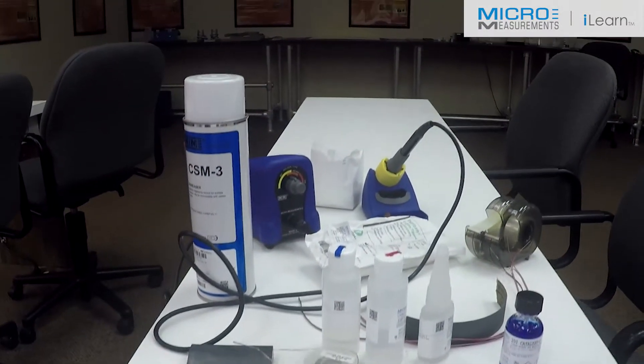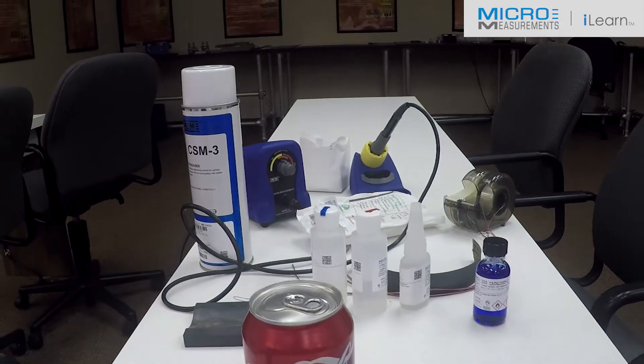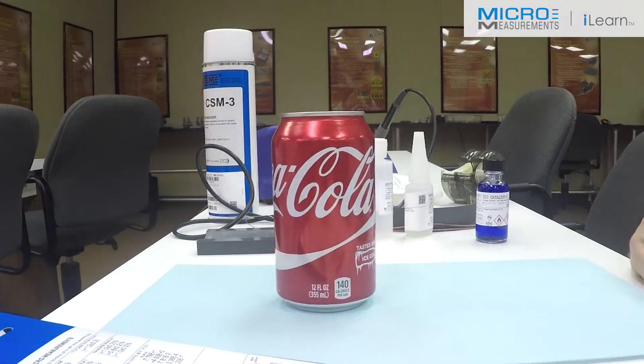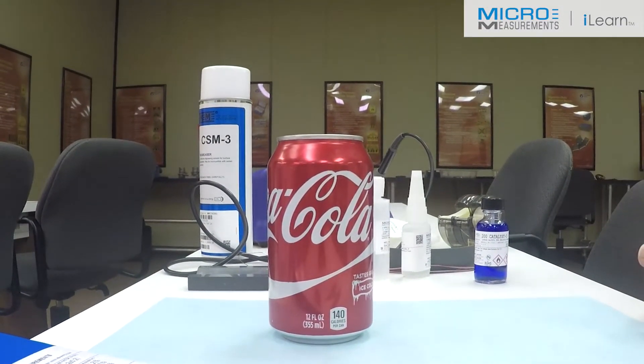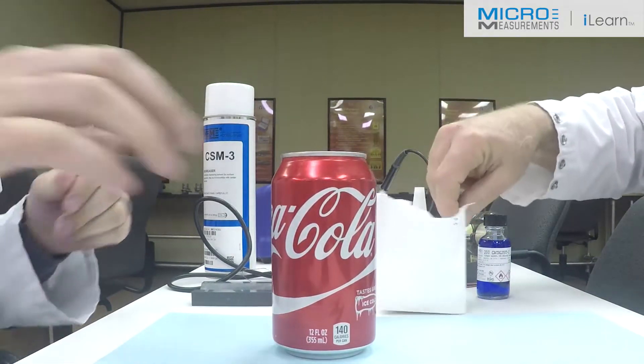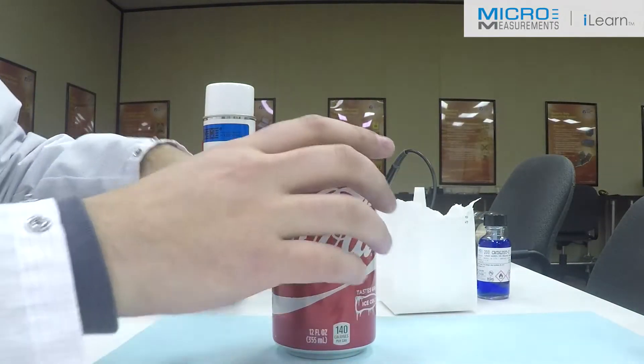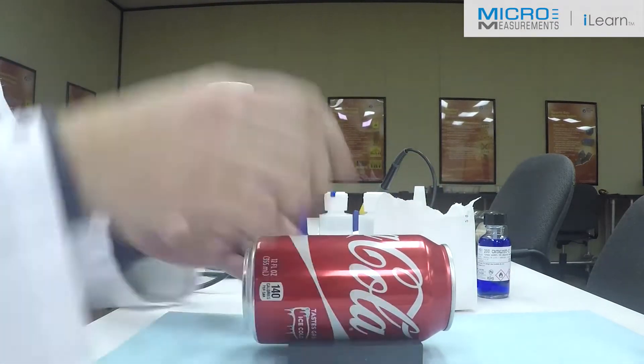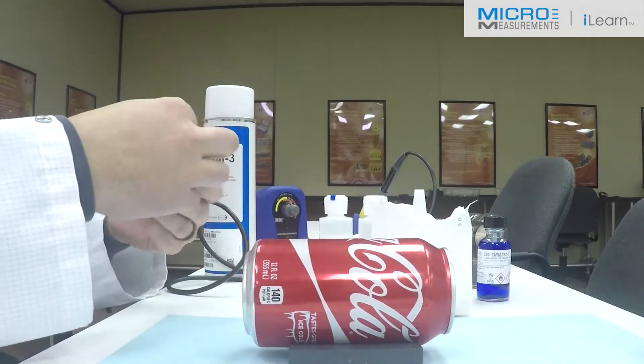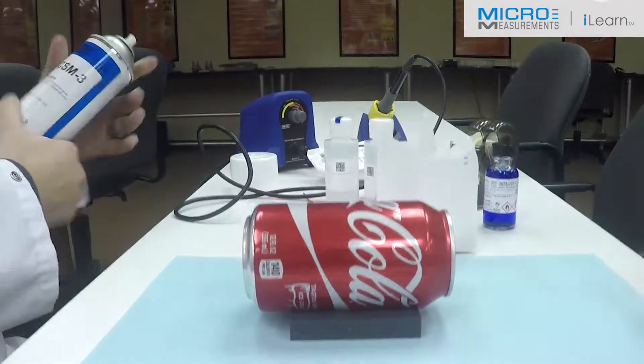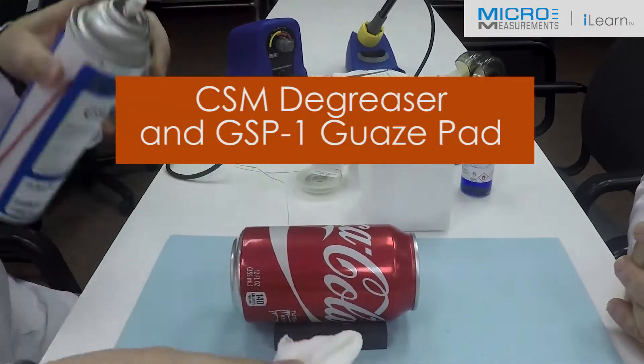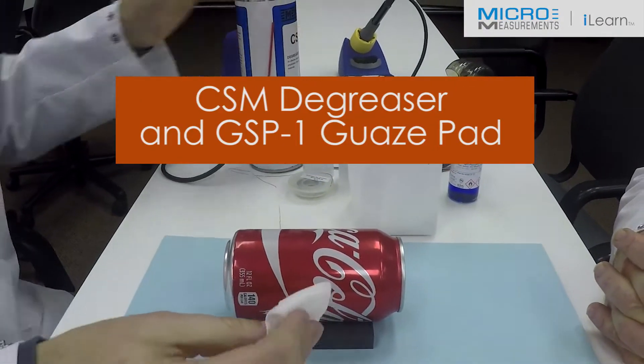Any of you ever wondered about what the pressure was in a Coke can? I've never done that either, but there you go. So first thing we're going to have to do is standard surface preparation and bond the strain gauge. Colin will take the CSM-3 degreaser and a gauze sponge and degrease the surface of our can to get rid of finger oils or any contaminants that might inhibit our bonding.